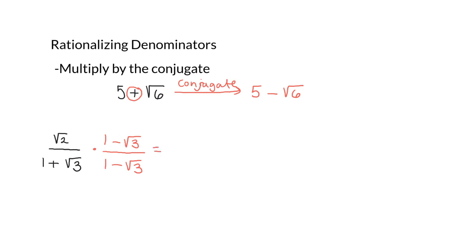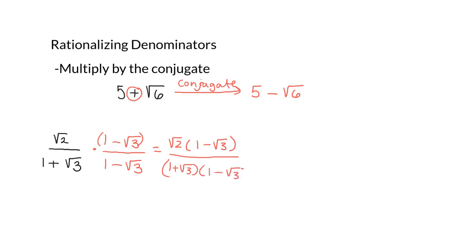In the numerator we have root 2 multiplied by 1 minus root 3. Simplifying: root 2 times 1 is root 2, and root 2 times negative root 3 would be negative root 6.